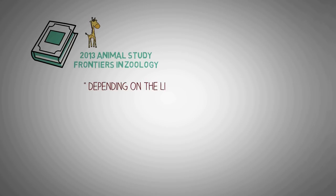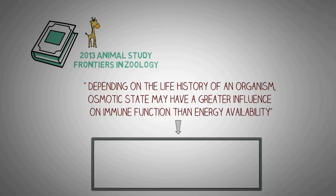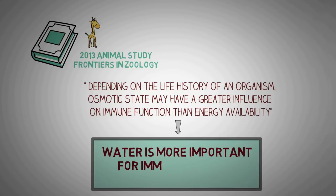In a 2013 animal study published in Frontiers of Zoology, researchers concluded that depending upon the life history of an organism, osmotic state may have a greater influence on immune function than energy availability, which in simple words means water is more important for immune function than food.